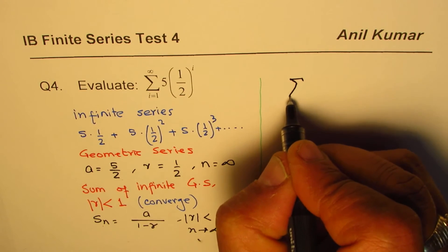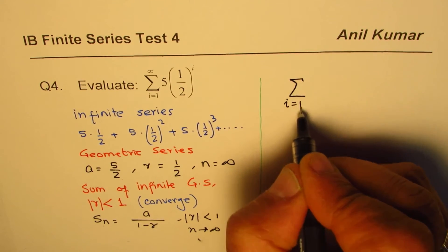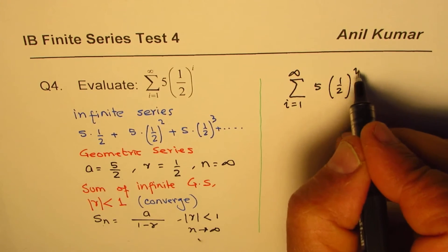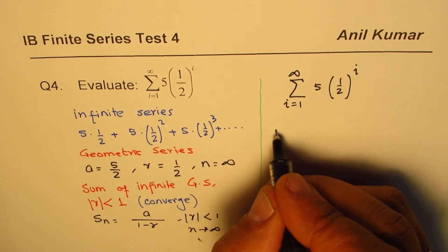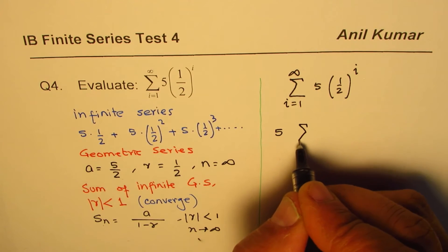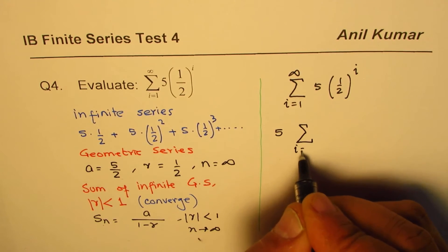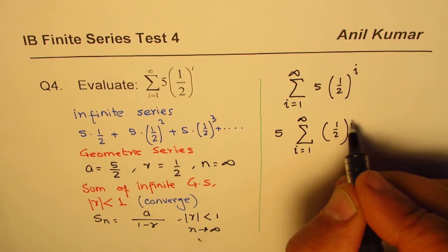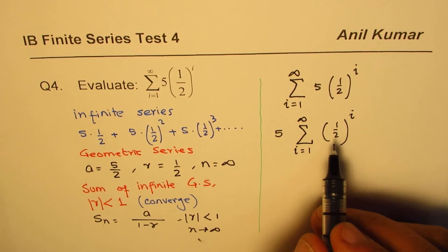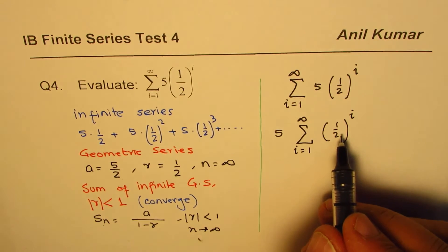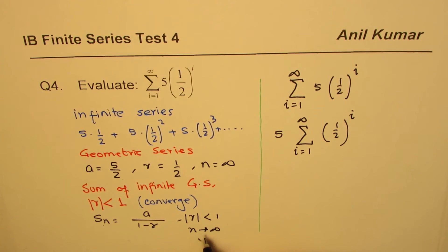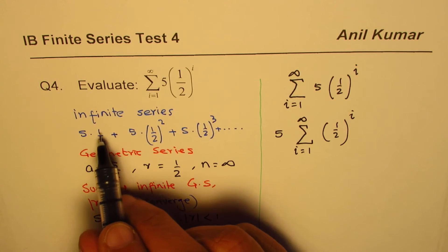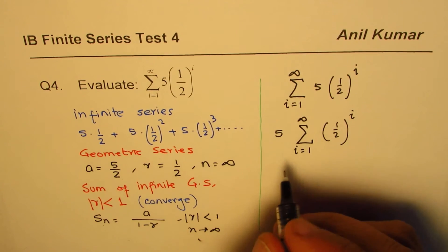So let's begin the question now. What we are given here is an infinite series where i of course from one to infinity, and it is five times one-half to the power of i. So five can be taken outside. We have the sigma, the sum of terms from one to infinity, for one-half to the power of i. Now that is a geometric series as we just saw.